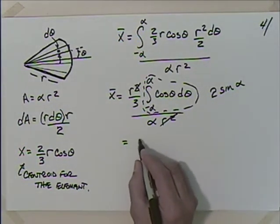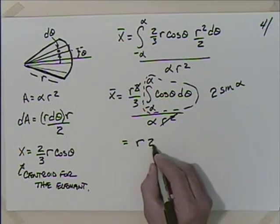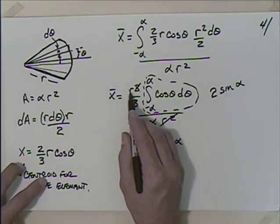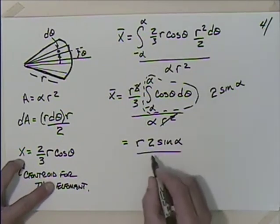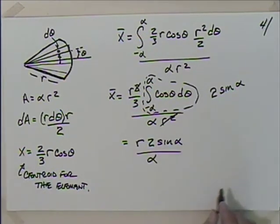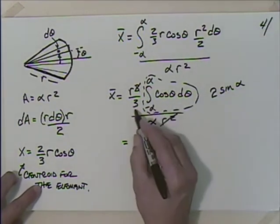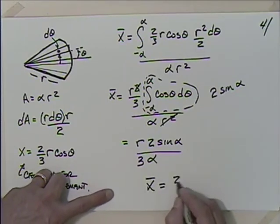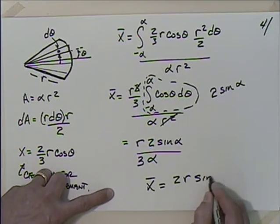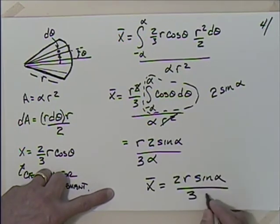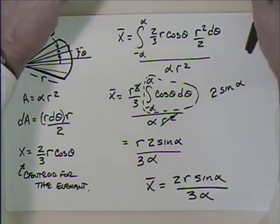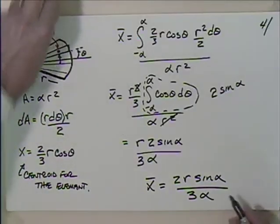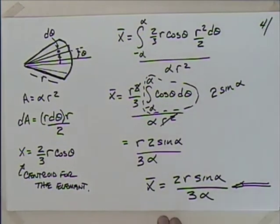Putting it all together: X-bar equals r times 2 sin α divided by α, times 1/3, giving 2r sin α divided by 3α. Have I seen that before? Yes — exactly the same answer as the first method. So we can have quite a bit of confidence in that answer. This way is arguably easier since most people know the triangle centroid is at 2/3, whereas the arc centroid formula requires recalling the previous result.